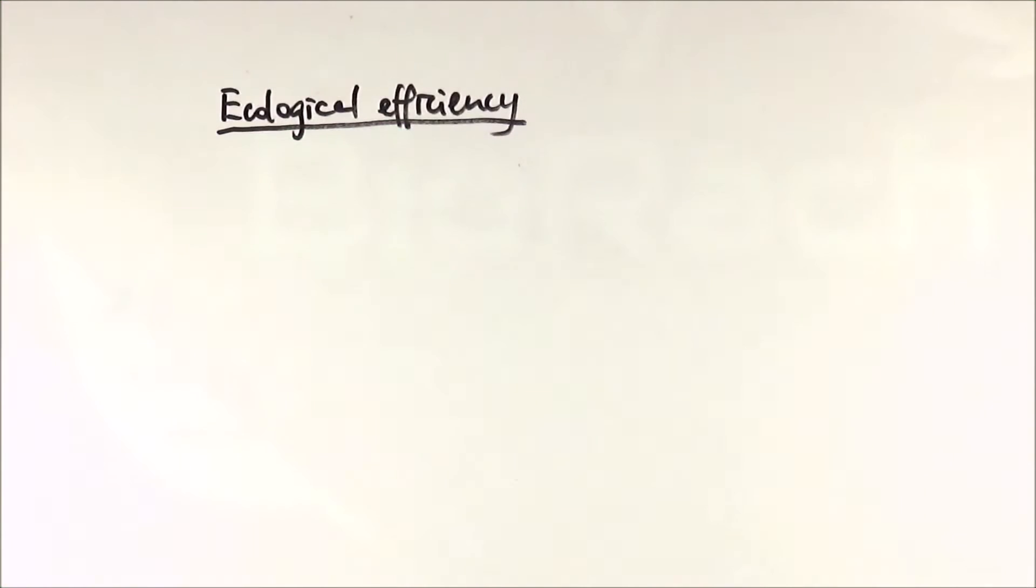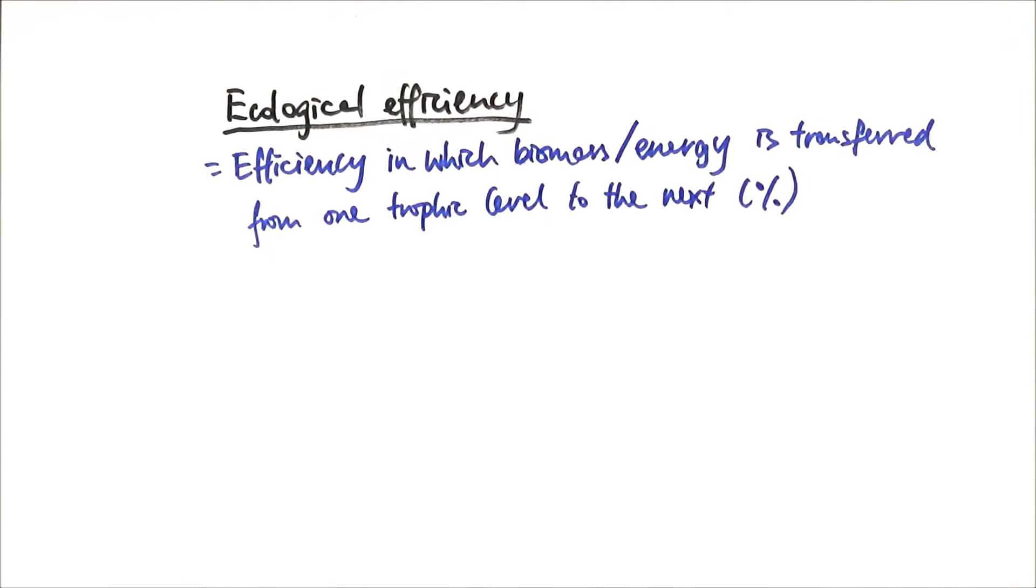I mentioned a couple of times earlier that biomass relates to the amount of energy that an organism contains, and therefore we need to consider ecological efficiency when thinking about food chains. Ecological efficiency refers to the efficiency in which biomass or energy is transferred from one trophic level to the next, and we often consider this in percentage.